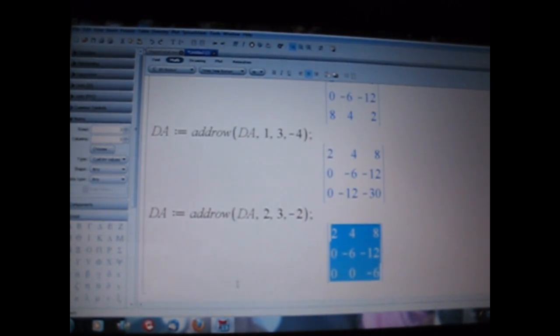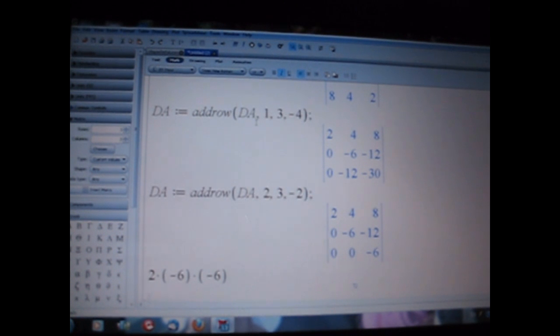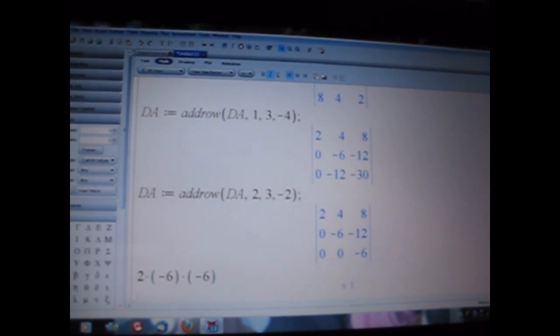Our diagonal is two, negative six, negative six, which if you multiply will give you 72. You can use Maple for that as well. Take the easy way: two times negative six times negative six. And we hit enter and you will see you get 72.